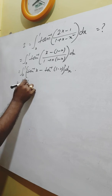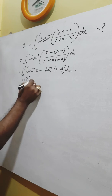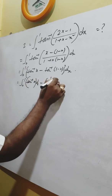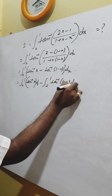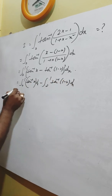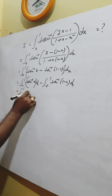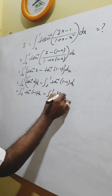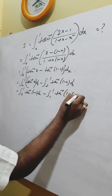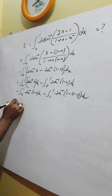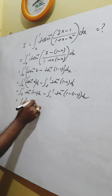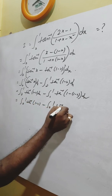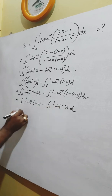That is equal to the integral from 0 to 1 of tan inverse x dx, minus the integral from 0 to 1 of tan inverse (1 minus x) dx. Now, applying the property, the integral from 0 to 1 of tan inverse (1 minus x) dx equals the integral from 0 to 1 of tan inverse (1 minus (1 minus x)) dx, which is the integral from 0 to 1 of tan inverse x dx.